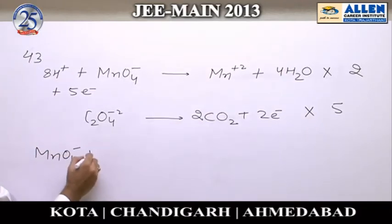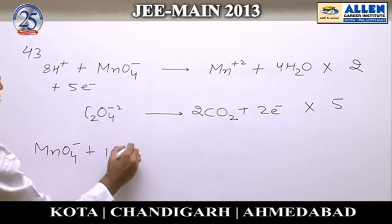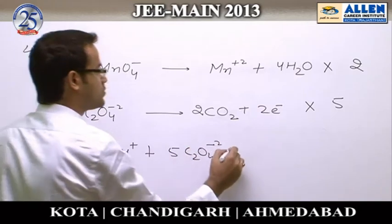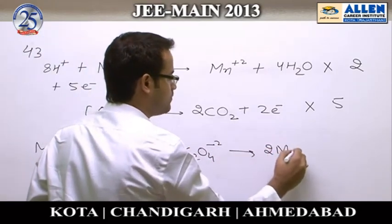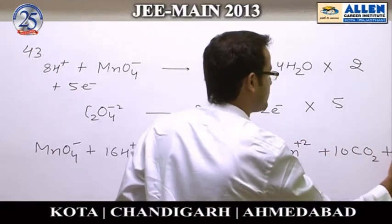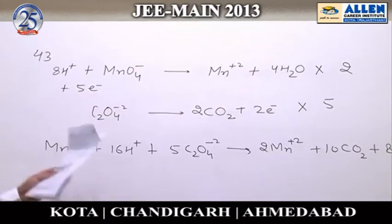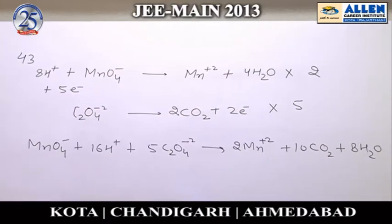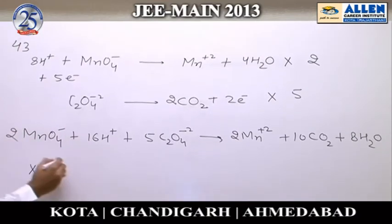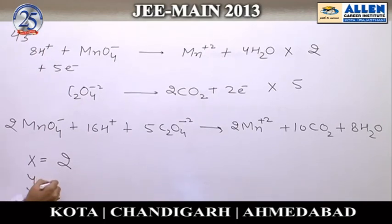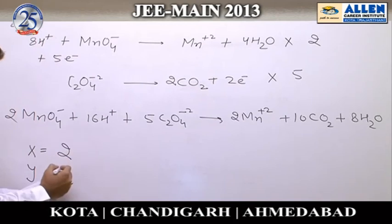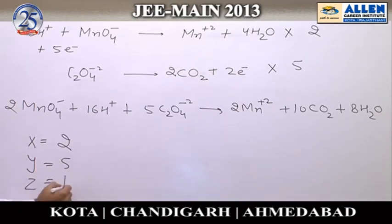By adding these two reactions we get: 2 MnO4⁻ + 16 H⁺ + 5 C2O4²⁻ converting into 2 Mn²⁺ + 10 CO2 + 8 H2O. Comparing this balanced equation with the given equation, we get x = 2, y = 5, and z = 16.